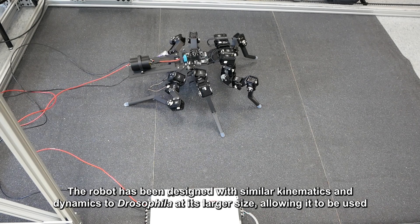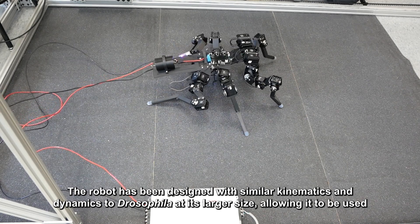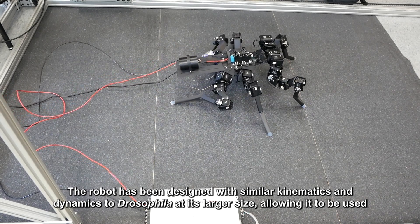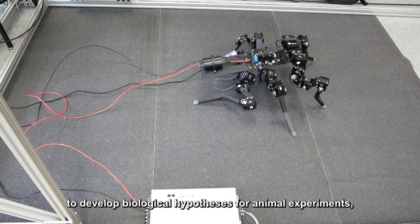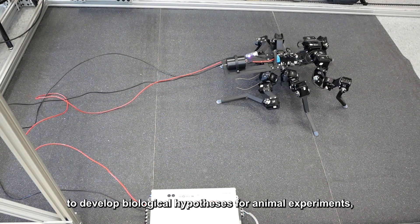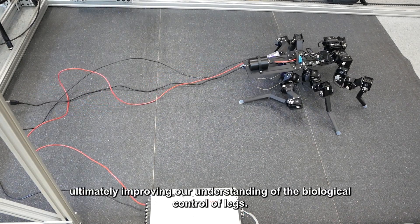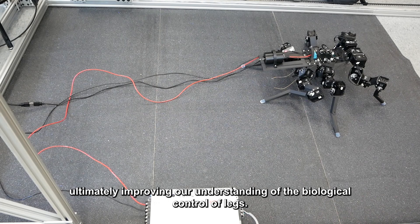The robot has been designed with similar kinematics and dynamics to Drosophila at its larger size, allowing it to be used to develop biological hypotheses for animal experiments, ultimately improving our understanding of the biological control of legs.